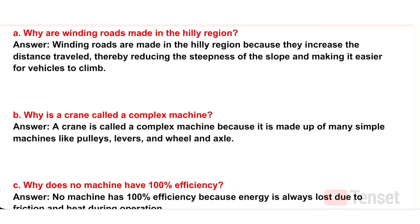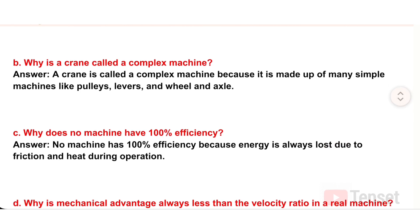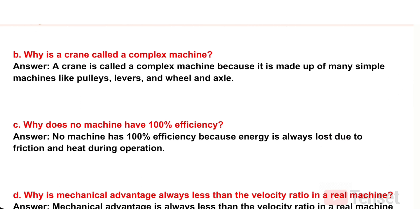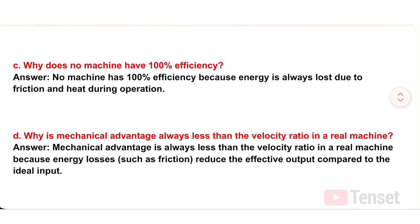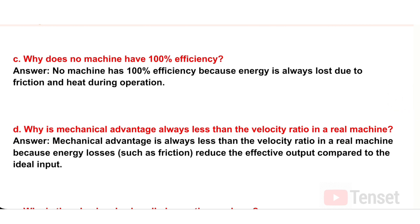B) Why is a crane called a complex machine? Answer: A crane is called a complex machine because it is made up of many simple machines like pulleys, levers, and wheel and axle. C) Why does no machine have 100% efficiency? Answer: No machine has 100% efficiency because energy is always lost due to friction and heat during operation.